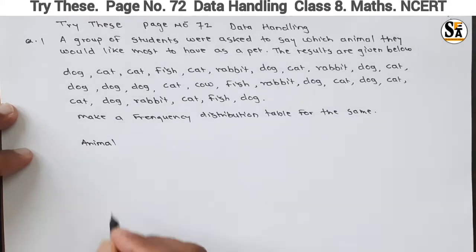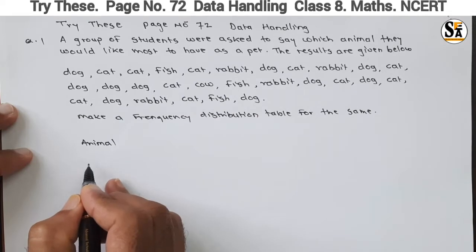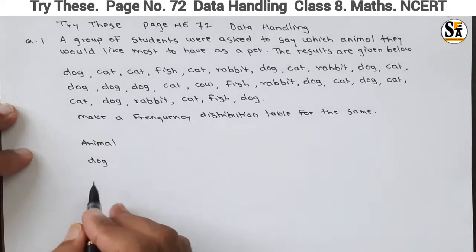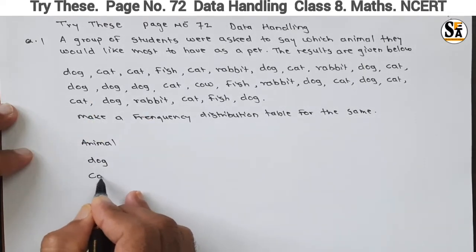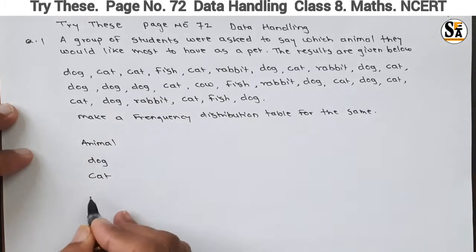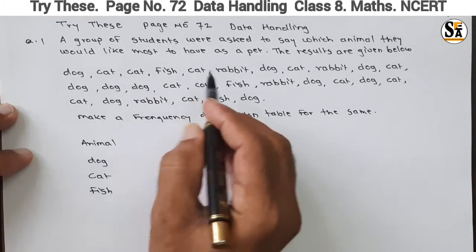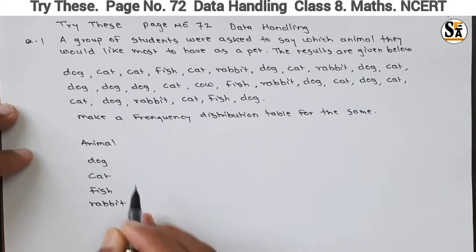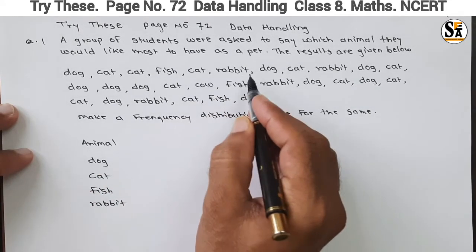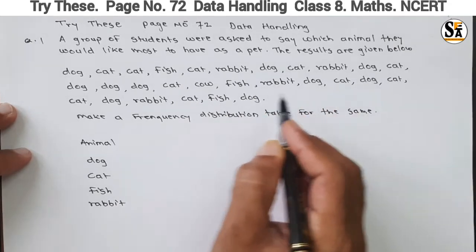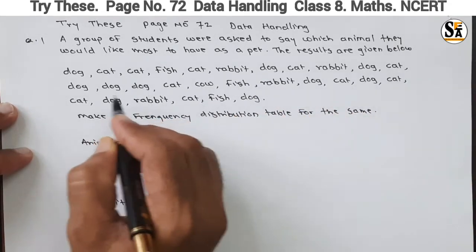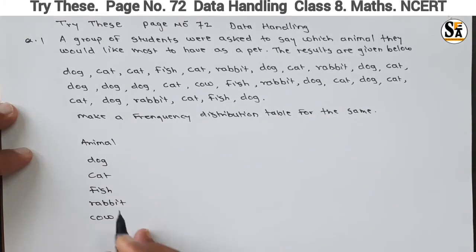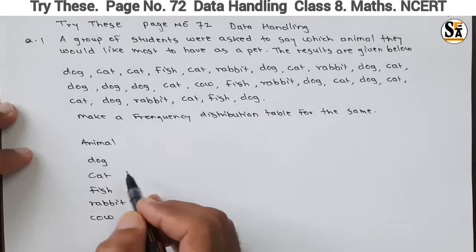Which animals are given here, we will write them in the first column. The first animal given is dog, then cat, then fish, then rabbit, and one more is given — that is cow. So these five animals are given, and each student's choice about their preferred pet animal is given in the data.